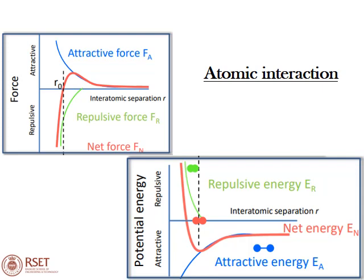From the graph, the blue line represents attractive force and green represents repulsive force. There is a net force as the sum of attractive and repulsive forces. At a particular point, the attractive force and repulsive force balance each other, so the net force is zero. This point is labeled r₀, the interatomic separation — a stable separation where an optimum attractive force and optimum repulsive force produce zero net force.